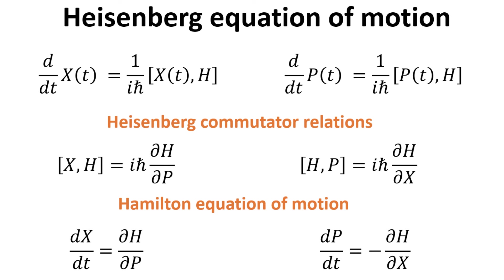In a previous video in the same playlist, we have also derived the Heisenberg commutator relations. Replacing the commutators in the Heisenberg equation of motion with these commutator relations then allows us to arrive at the Hamilton equation of motion, which says that the time derivative of the position operator is the differential of the Hamiltonian with respect to the momentum operator, and that the time derivative of the momentum operator is the differential of the Hamiltonian with respect to the position operator.